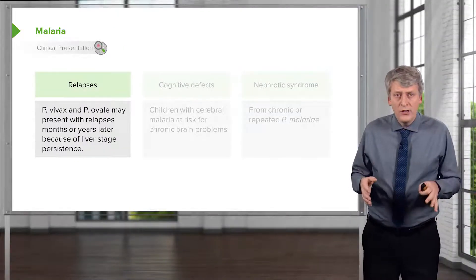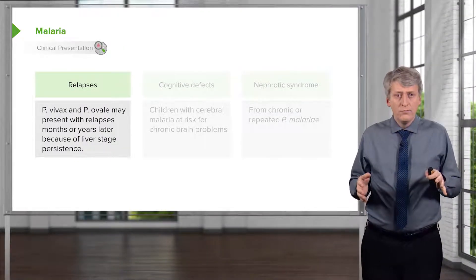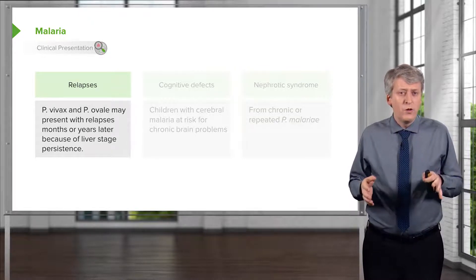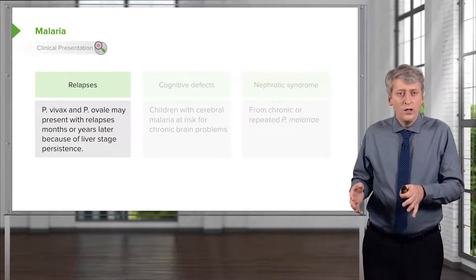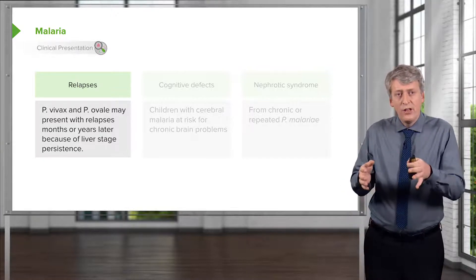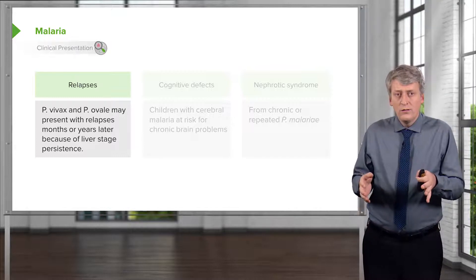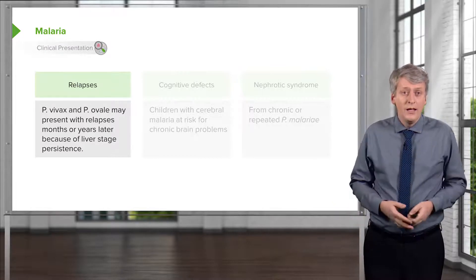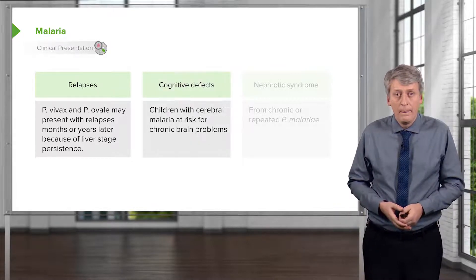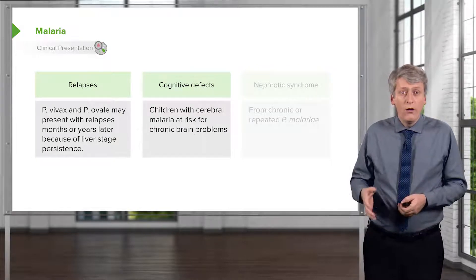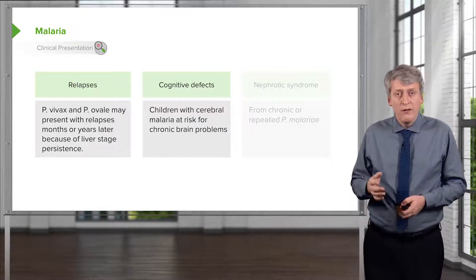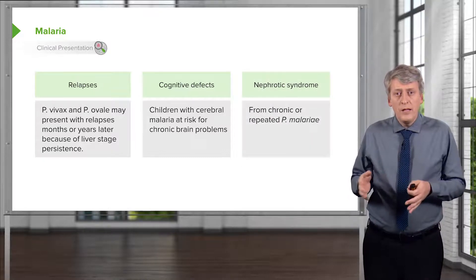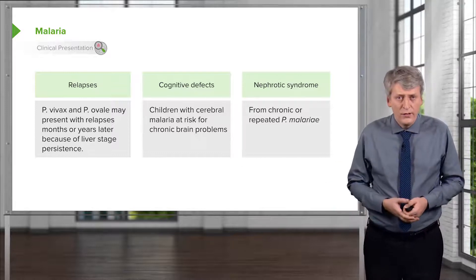The clinical presentation differs a bit by species. P. vivax and P. ovale typically may present with relapses months or years later because of persistence of the liver stage, so these can happen years after returning from an endemic area. Patients with cerebral malaria are at risk for chronic brain problems, and don't forget that chronic or repeated P. malariae may be associated with nephrotic syndrome.